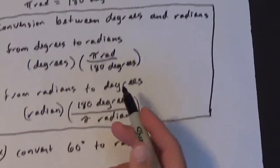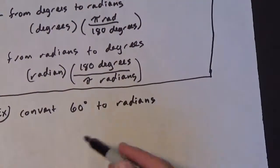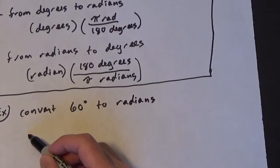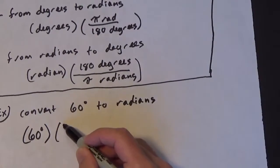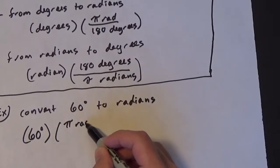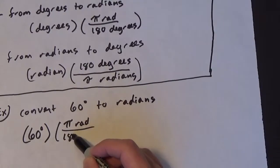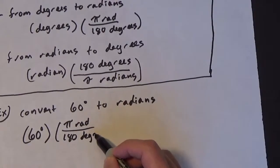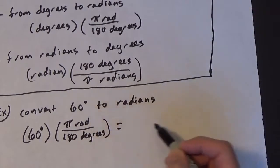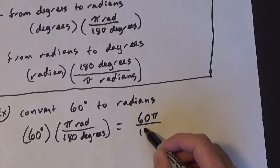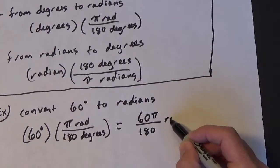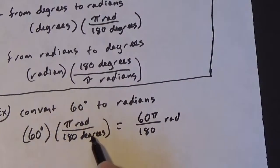All right, well that's not too bad. We take our degrees and we multiply by pi radians over 180 degrees. So this is going to end up being 60 pi over 180 radians, because the degrees do cancel out.